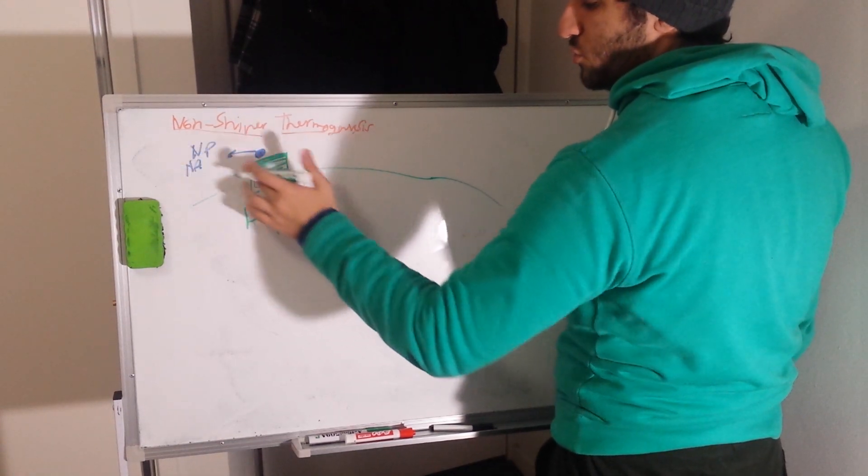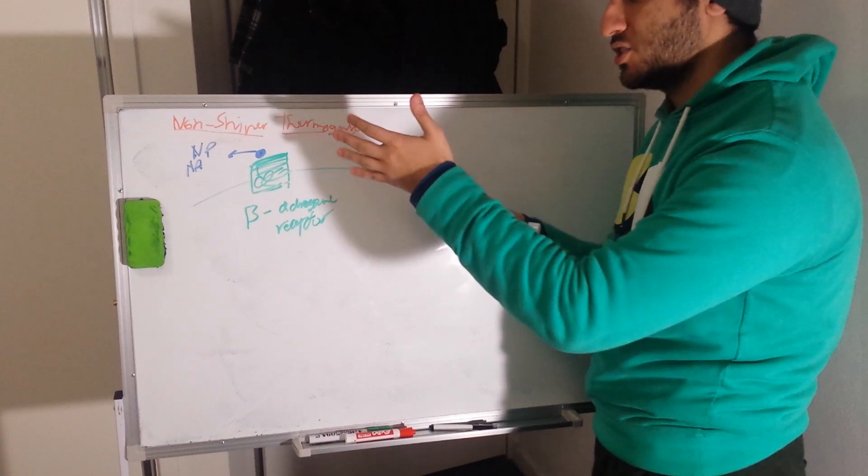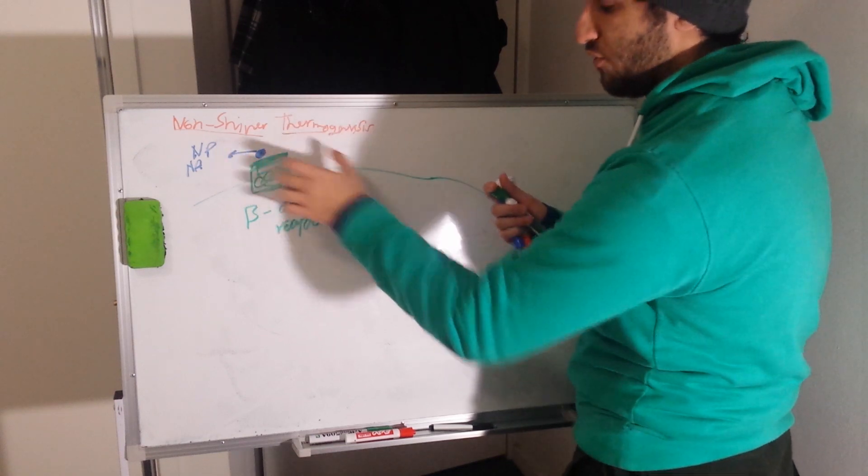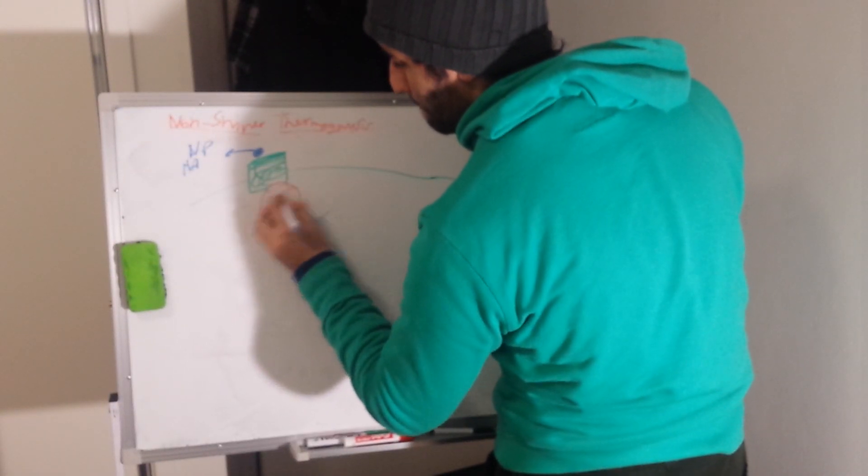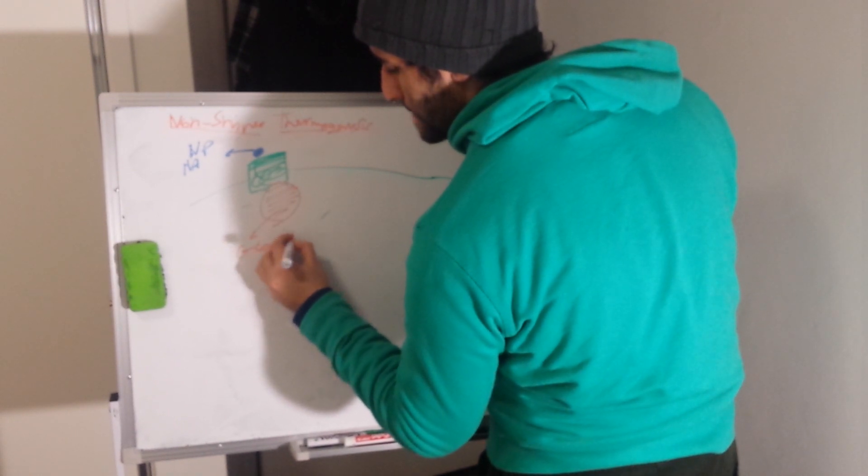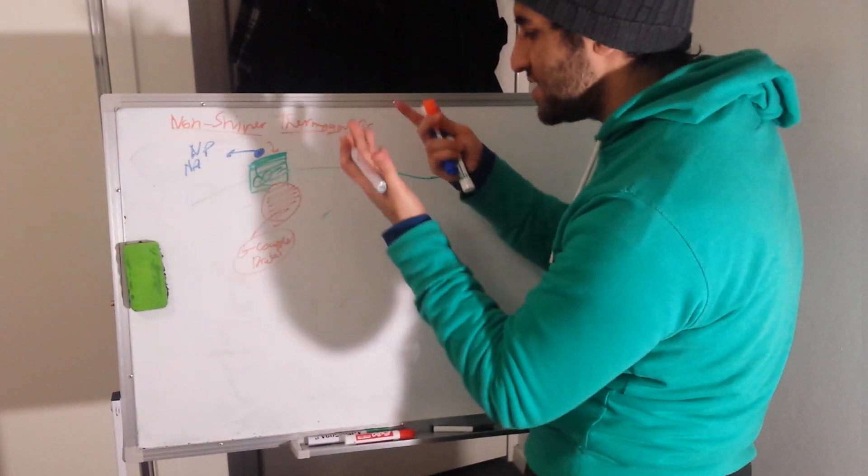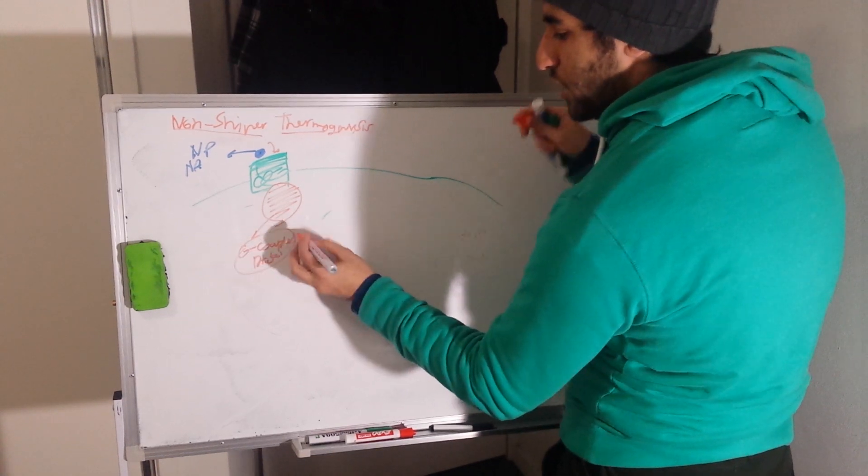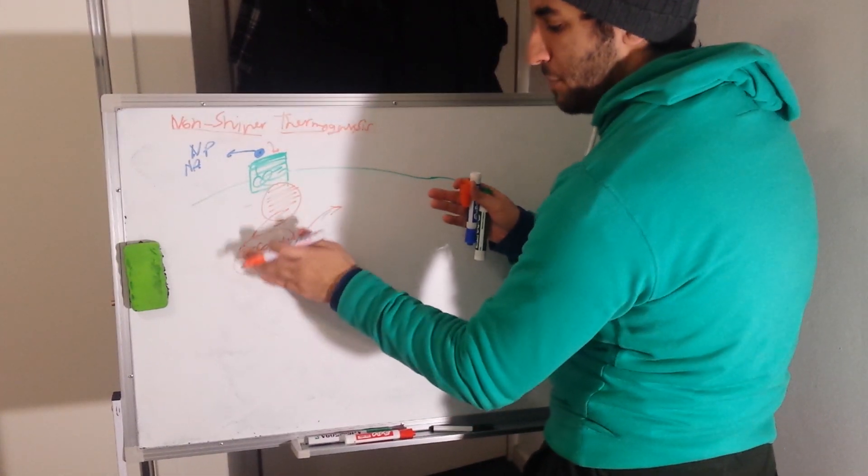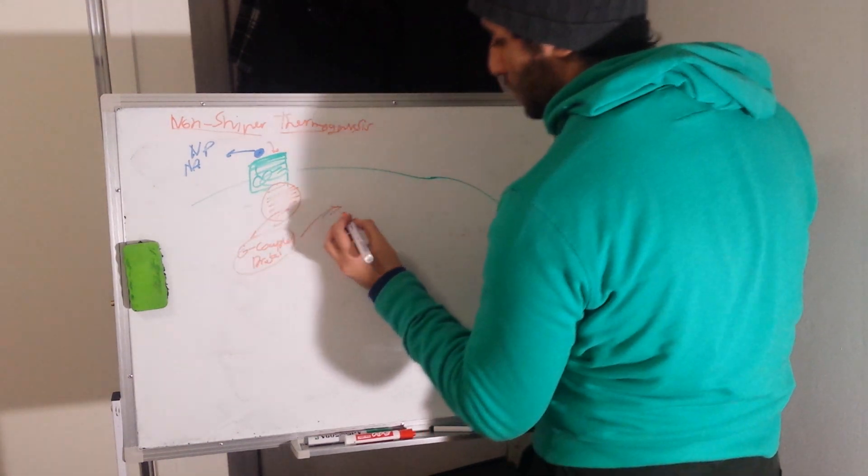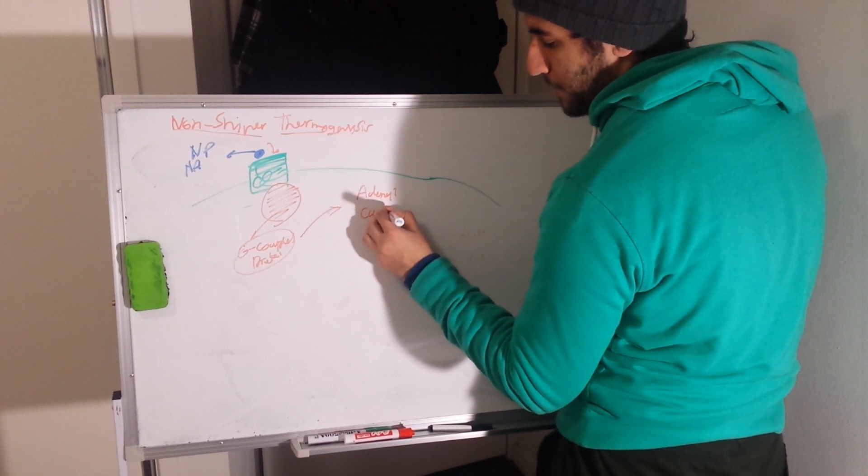Upon binding of norepinephrine to the beta-adrenergic receptor, a specific G-coupled protein that I'm going to extensively discuss in future videos is being activated upon conformational change. So this G-coupled protein, upon binding and conformational change, is being activated. Upon activation of G-coupled protein, this specific subunit known as G-alpha, the alpha subunit, would then go on to activate a specific enzyme known as adenylyl cyclase.